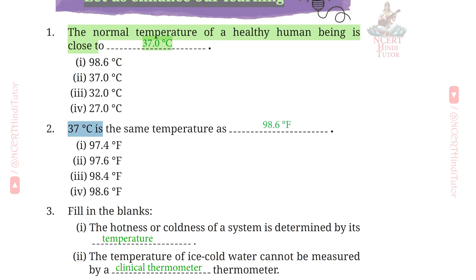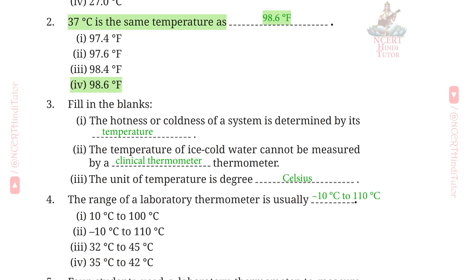Question 2: 37 degrees Celsius is the same temperature as 98.6 degrees Fahrenheit.